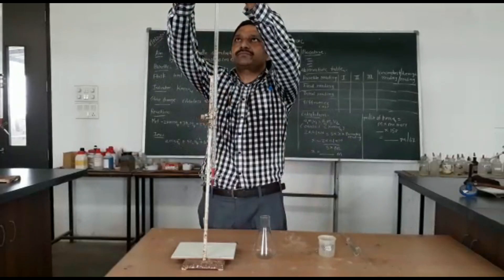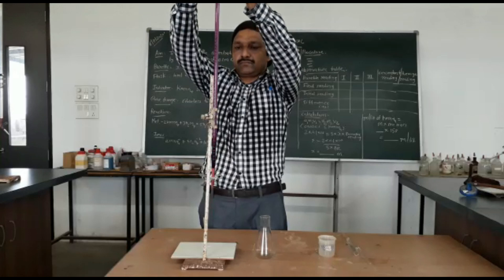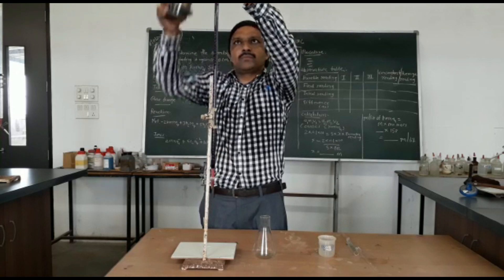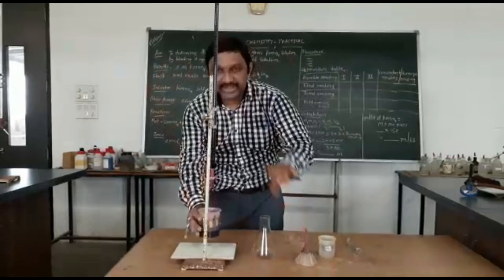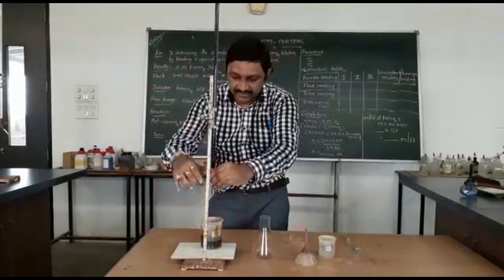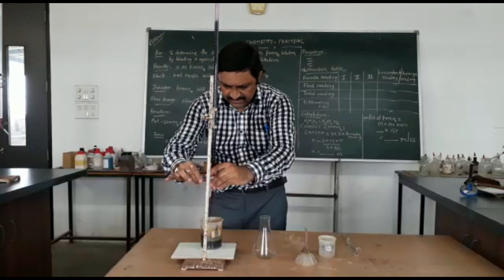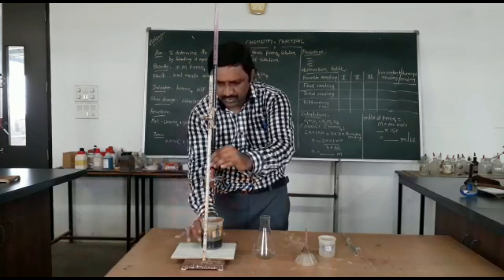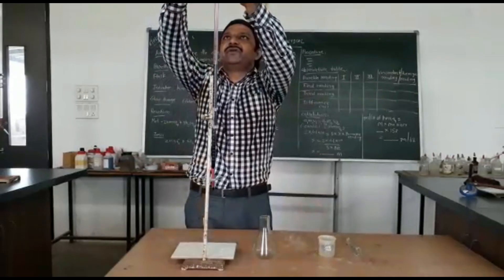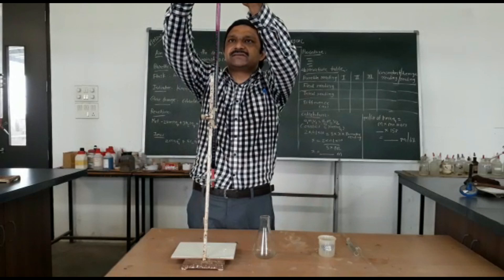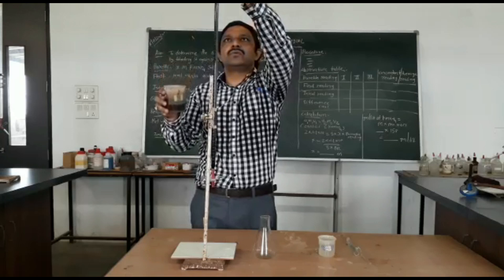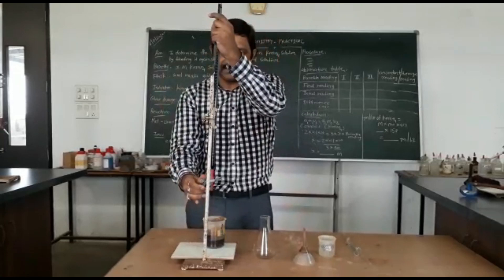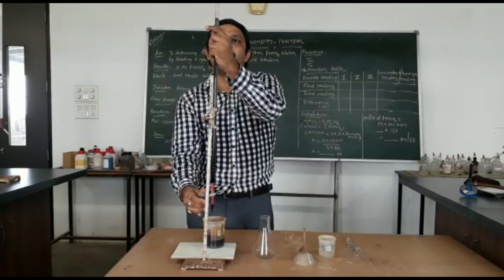Fill up the burette with KMnO4 solution and set the jet. Set your zero at the upper meniscus — your zero is set clearly.